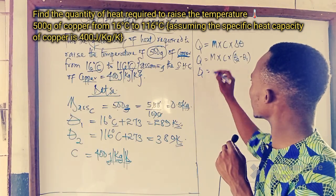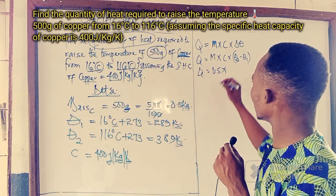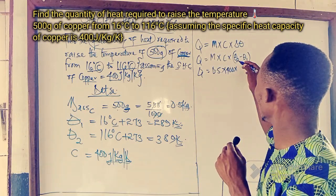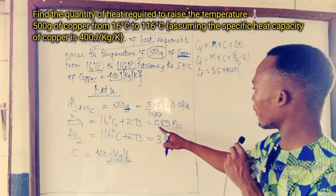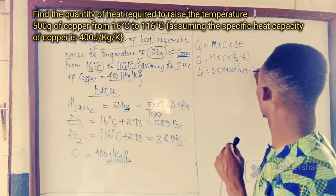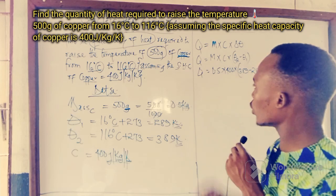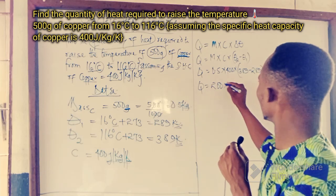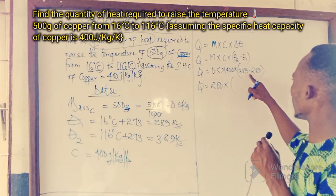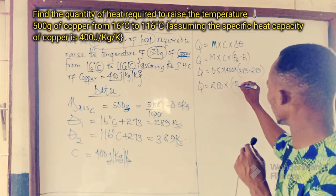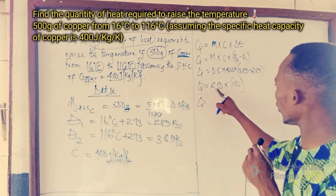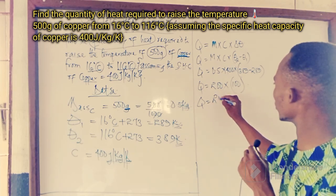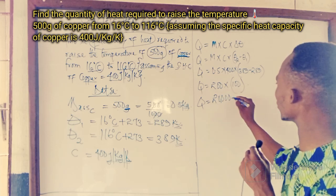Our mass is 0.5, specific heat capacity is 400, and the change in temperature is 389 minus 289, which equals 100. So Q equals 0.5 times 400, which gives 200, times 100. That gives us 20,000 joules.